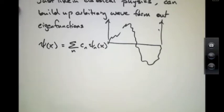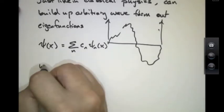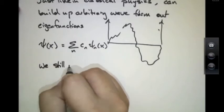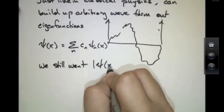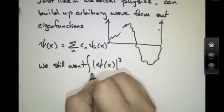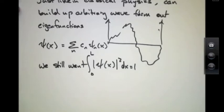These constants cn are the constants that describe the admixture of these allowed eigenfunctions. We still want a wave function that's normalized, which means that we want the wave function to have an integral of its norm squared equal to 1.